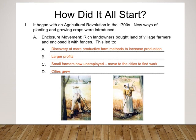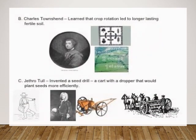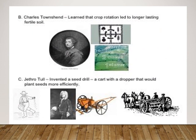The Enclosure Movement led to the discovery of more productive farm methods to increase production and larger profits. Small farmers, now unemployed, moved to the cities to find work, and new cities grew. Townshend learned that crop rotation led to longer-lasting fertile soil. Jethro Tull invented a seed drill that would plant seeds more efficiently.